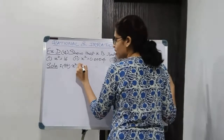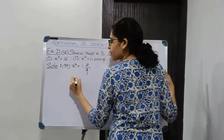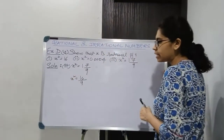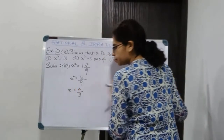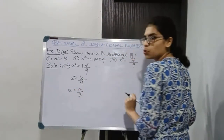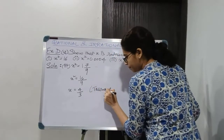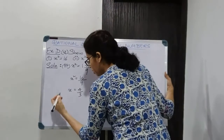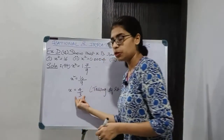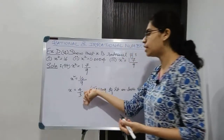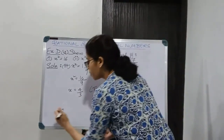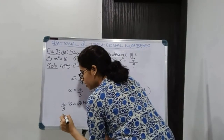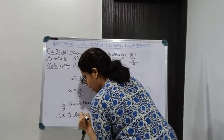Moving on to the last part of the question: x square is equal to 1 and 7 by 9, which is a mixed fraction. Converting it: 9 × 1 plus 7 gives 16, so x square is 16 by 9. Taking square root on both the sides, x will be 4 by 3, since square root of 16 is 4 and square root of 9 is 3. Now 4 upon 3 is in the form P upon Q where P and Q are both integers and Q is not equal to 0, so 4 upon 3 is a rational number. Therefore x is rational.